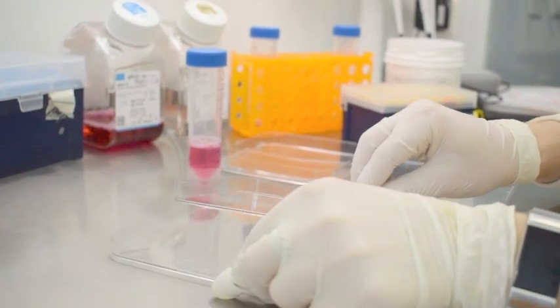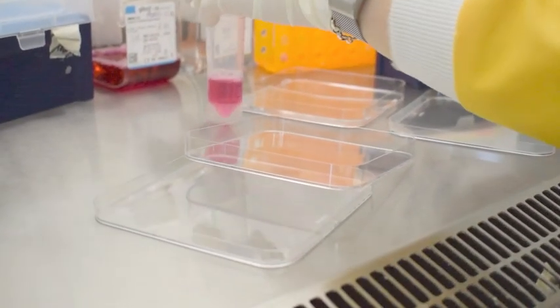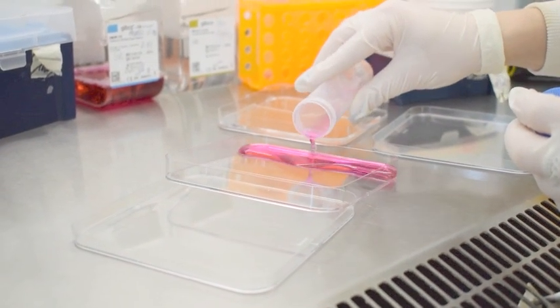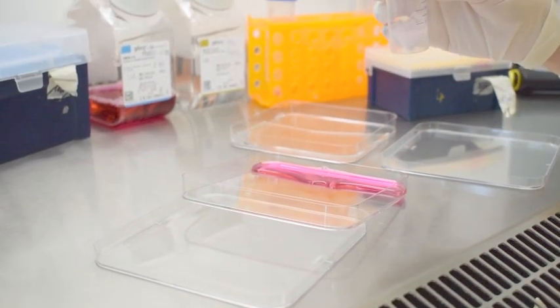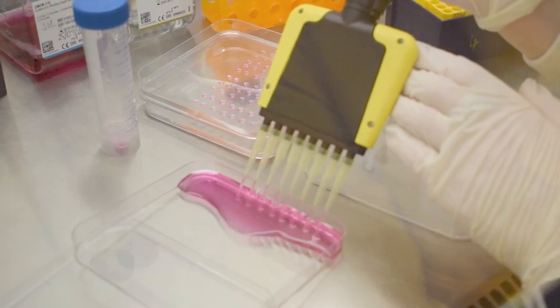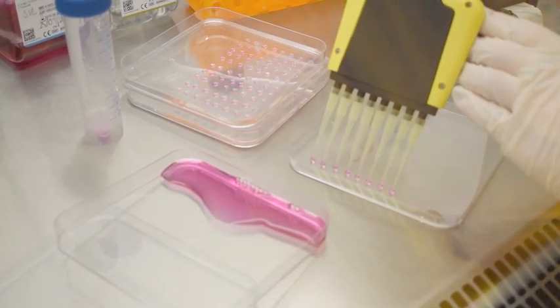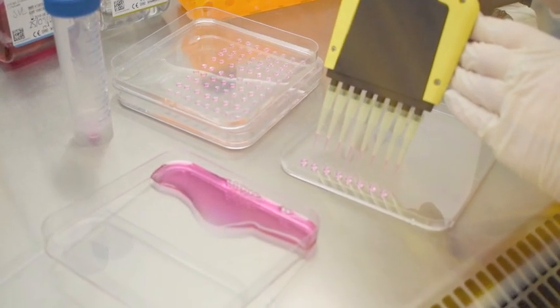Using an additional petri dish, add the cell suspension to a slightly angled lid. Using a multi-channel pipette, pipette 20 µl of the cell suspension onto the top lid of the square petri dish.